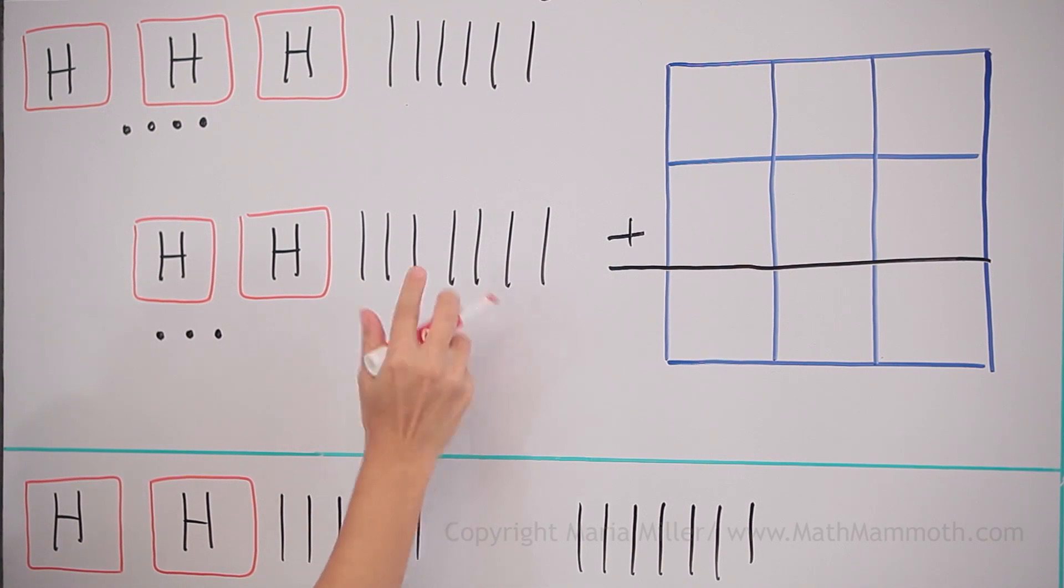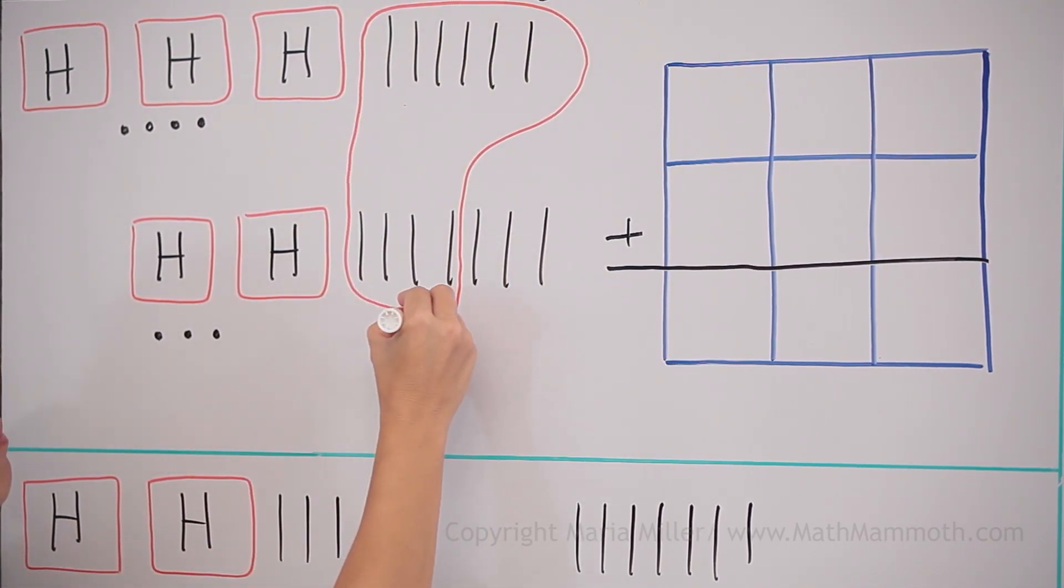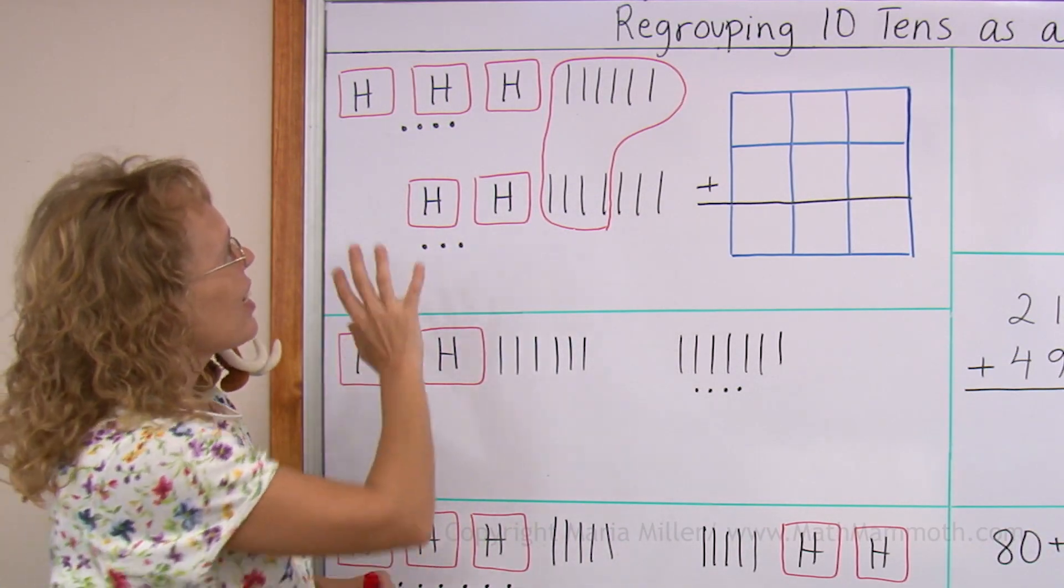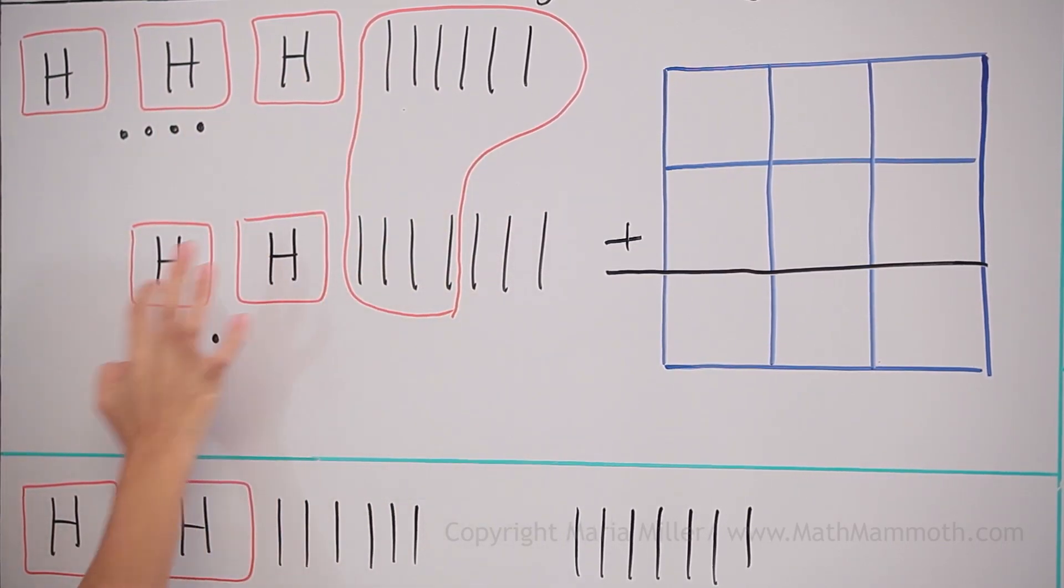Let me show you. We have six here, and then if I take four tens from here and circle them, that's going to be my new hundred. And then I can read the answer here. I would have one, two, three, four, five, six hundred.